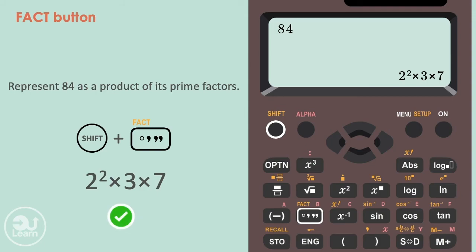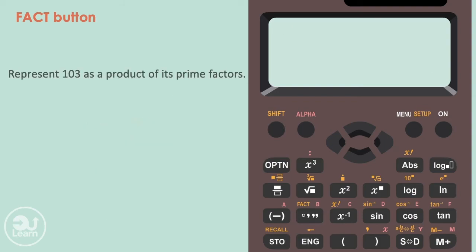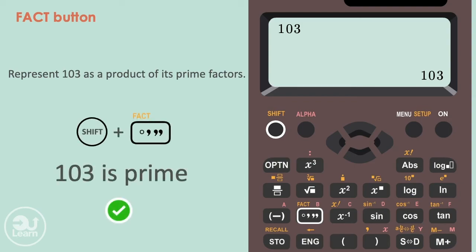This button is great for representing a number as a product of its primes, but also, for letting you know if a number is a prime number or not. For example, let's do the same thing, but with 103. We type in 103, we press equals, then we press shift, then the fact button, then nothing changes. Because nothing changes, this means 103 is a prime number. It has no other factors except one and itself. And that's it.